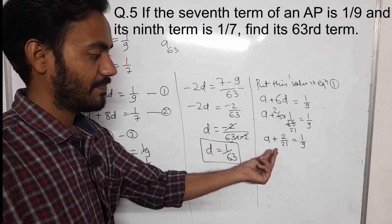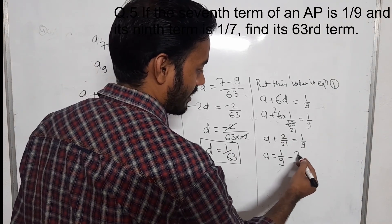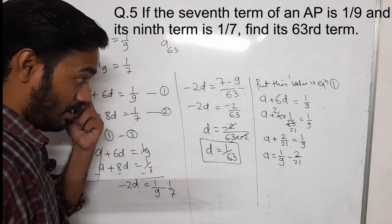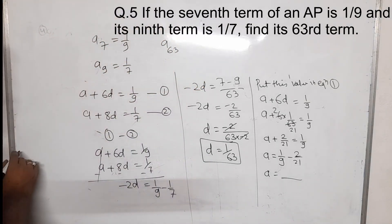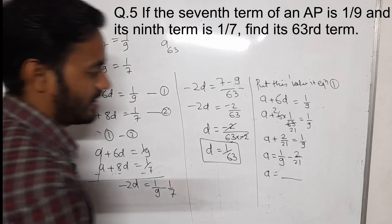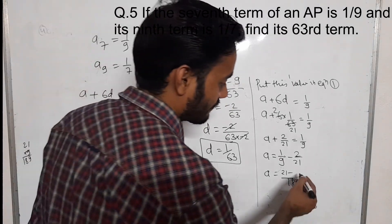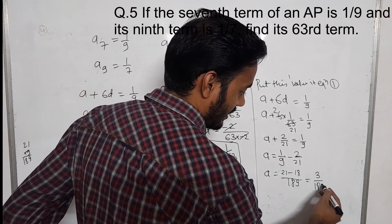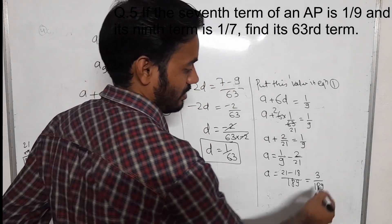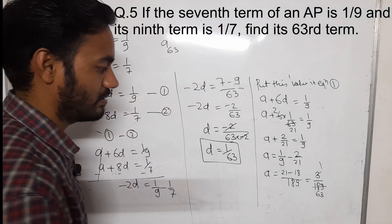This 2 by 21 is on the plus side, so it goes to minus. Then A equals 1 by 9 minus 2 by 21. Taking LCM: it becomes (21 minus 18) by 189, giving 3 by 189. This cancels by 3, so our A also becomes 1 by 63.